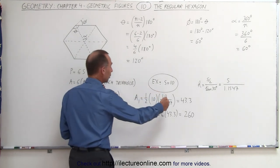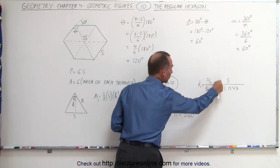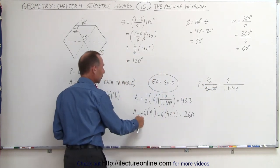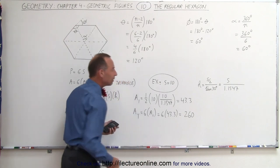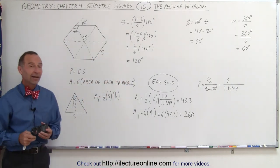So in this case, if S is equal to 10, we find the area of each triangle using this relationship between H and S, and then we multiply times 6 to find the area of the total regular hexagon. And that's how we do that.